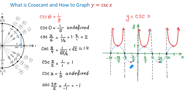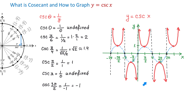Between the asymptotes below the x-axis, the function will approach negative infinity. Then the same pattern will continue to the right and to the left indefinitely. This is the graph of the function y equals cosecant of x.